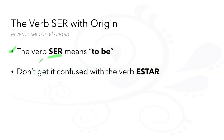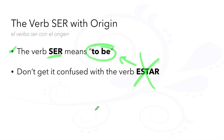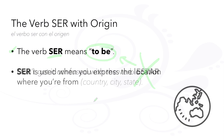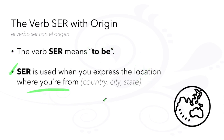The verb ser is an irregular verb that means 'to be.' Don't get it confused with the verb estar, which also means 'to be.' We utilize the verb ser to tell people where you're from, whether it's a country, city, or state.